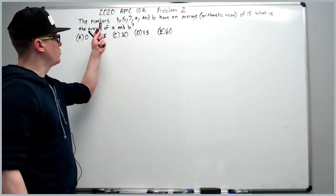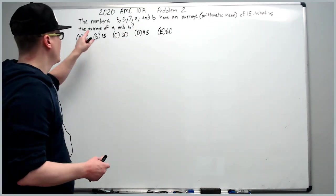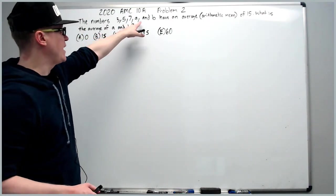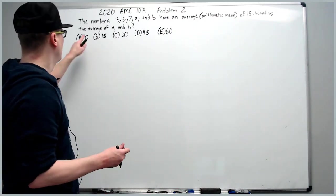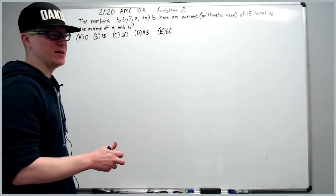All right, and on to the 2020 10A problem two. The numbers 3, 5, 7, A, and B have an average of 15. What is the average of A and B?